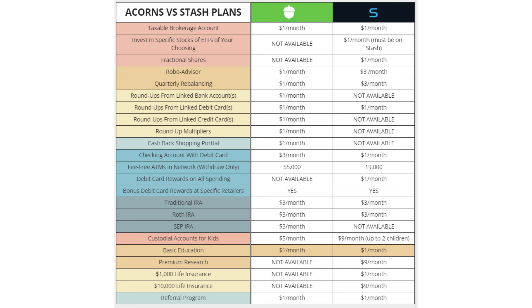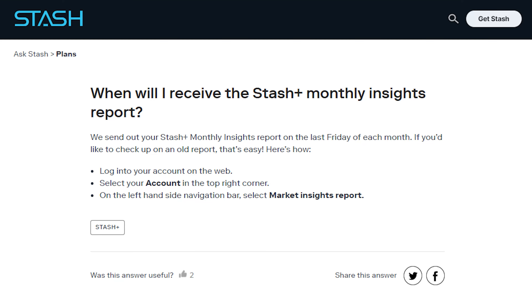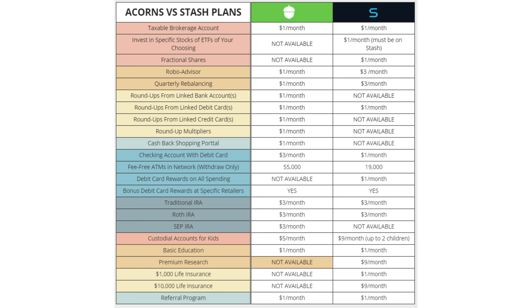With both Stash and Acorns basic plans you get access to very basic financial education — the kind you could find on any reputable personal finance website. However, with Stash's premium $9 a month plan, called Stash Plus, you get premium research in the form of the Stash Plus Monthly Insights Report, sent out on the last Friday of each month. I haven't personally seen this report, but if anyone has, I'd love for you to share your thoughts in the comments. Acorns does not have anything similar, which makes sense since you aren't in control of your own investments in Acorns.